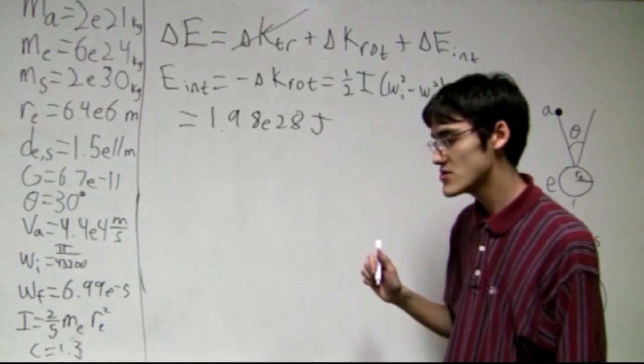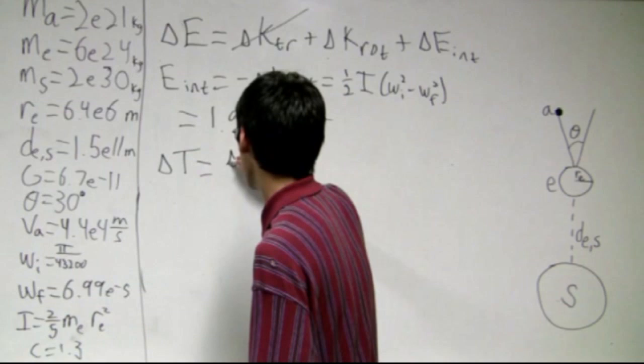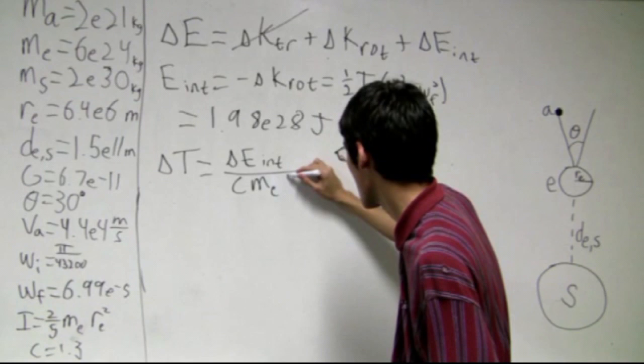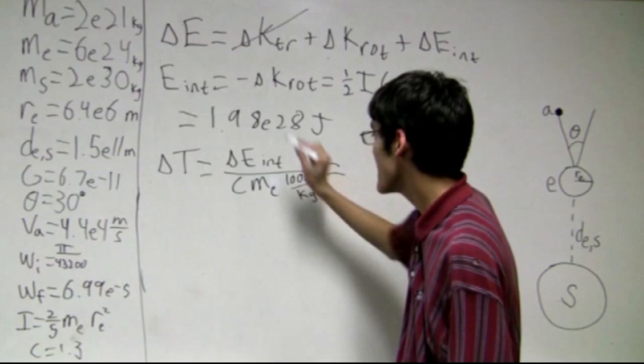So we need to convert that from joules to temperature. So the formula for temperature is delta E_internal over C mass. And since this mass is in kilograms, we need to get it from kilograms to grams. So that's 1,000 grams per kilogram. So we have all this information, so I can tell you that that is going to be 2.5 degrees Celsius.